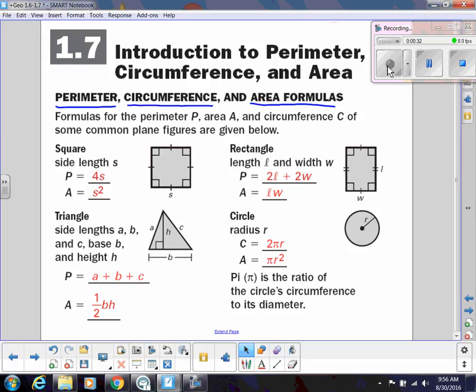So for a square, we have our perimeter is 4s, and s is just the side length. So if this was 10, then the perimeter would be 40. And then the area is side squared, side times side, so that would be 10 times 10, that would be 100.